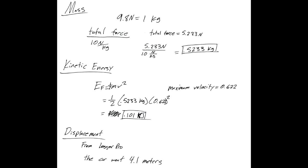For kinetic energy, we plug that into the equation Ek equals 1/2 mv squared, so it equals 1/2 times 0.5233 kilograms times 0.622 squared, and that equals 0.101 kilojoules. Again, displacement equals 4.1 meters.